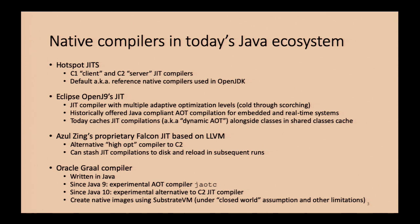I'll ask the audience: has anyone heard of Graal? About half the room. Is anyone using Graal as a Java compiler? Not many. How about Azul Zing? A few hands, maybe five — nobody using it. Has anyone heard of Eclipse OpenJ9? About half the room, maybe a little less. Is anyone using OpenJ9? A few people — I wish I had a shirt for you. And I assume everyone else knows about and is using Hotspot. Okay, pretty much everyone's using the reference JIT.